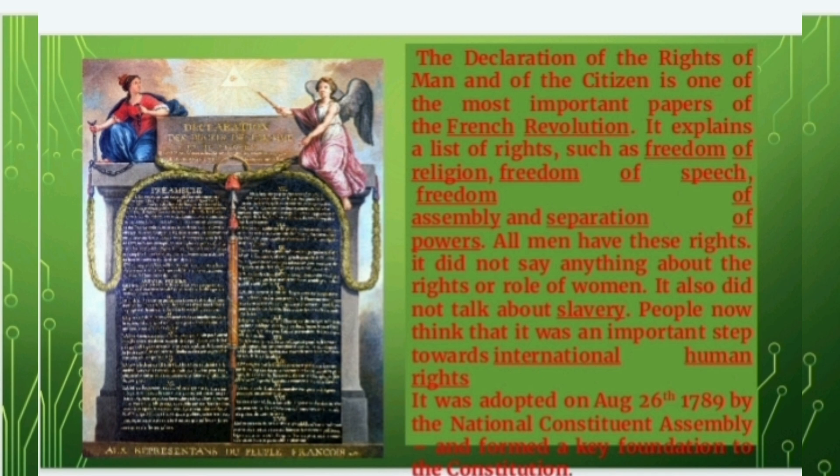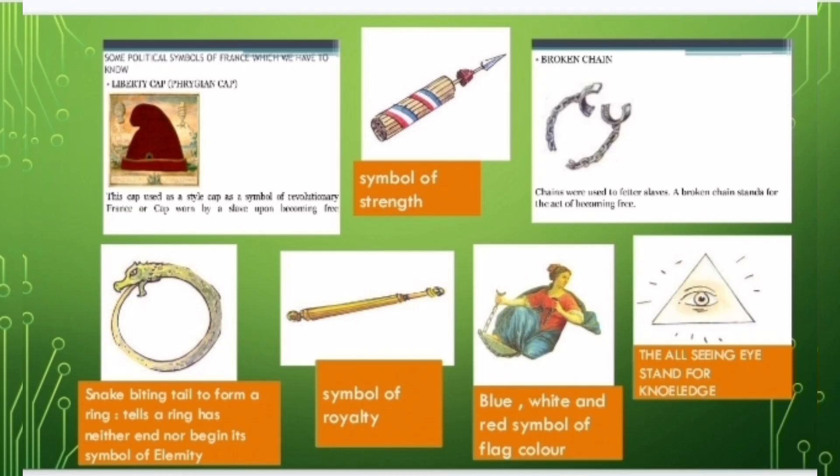Another picture has many different elements. You can see a red color cap, which used to be worn by slaves, so it is a symbol of slavery. In the middle you can see a bundle of rods tied by a tricolor flag, which is a symbol of strength.